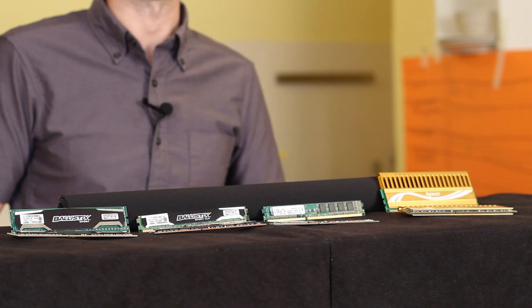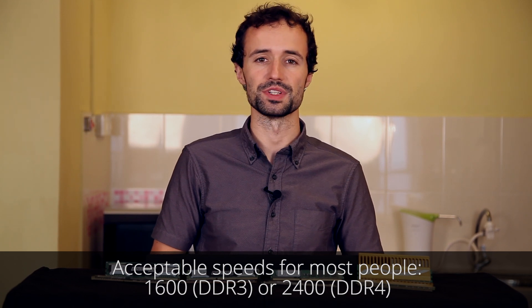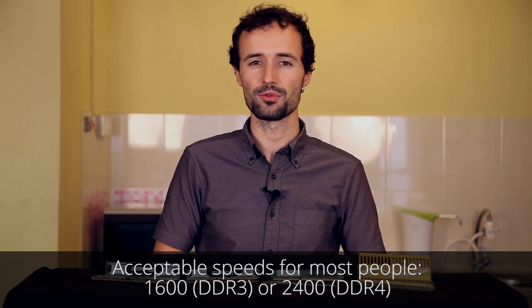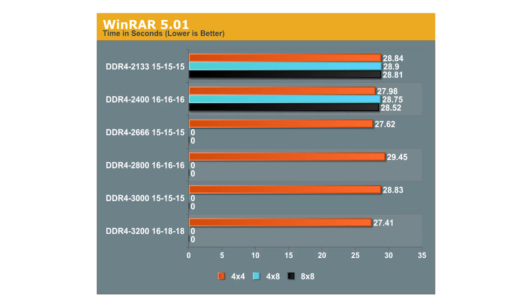Assuming you're not doing anything especially bandwidth-intensive, it's probably safe to settle on 1600 for DDR3 or about 2400 for DDR4. DDR4 RAM has introduced speeds going up to 4266 so far, but that doesn't mean you'll notice double the performance over the fastest DDR3. A recent benchmark from Anandtech showed that performance differences between PCs featuring RAM at speeds of 2166 and 3200 was only 0–5% depending on the application.